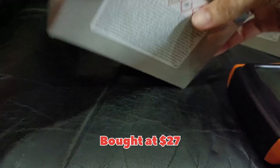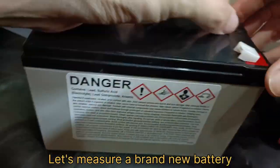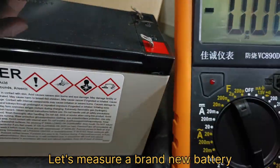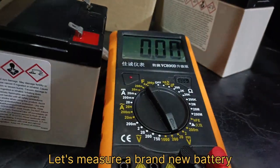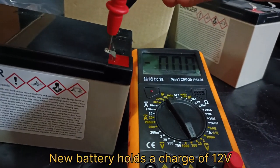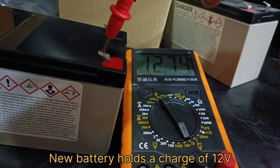We bought a brand new one at Home Hardware which costs about 27 dollars. Let's measure the brand new lead acid battery and see whether it has 12 volts in it. You can see the new battery holds a voltage of about 12 volts range.